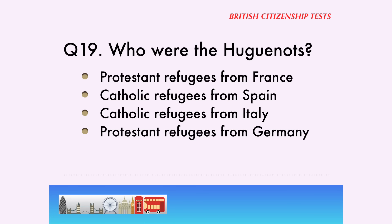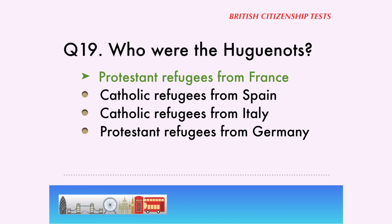Question 19. Who were the Huguenots? Protestant refugees from France, Catholic refugees from Spain, Catholic refugees from Italy, Protestant refugees from Germany. The correct answer is... Protestant refugees who came from France.